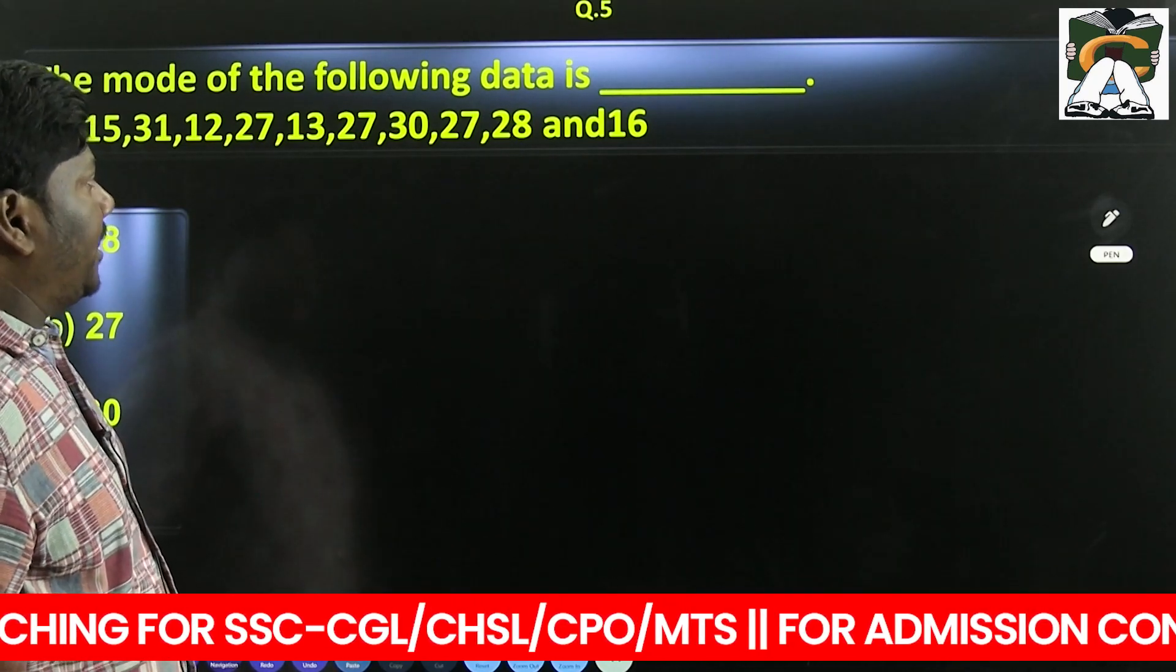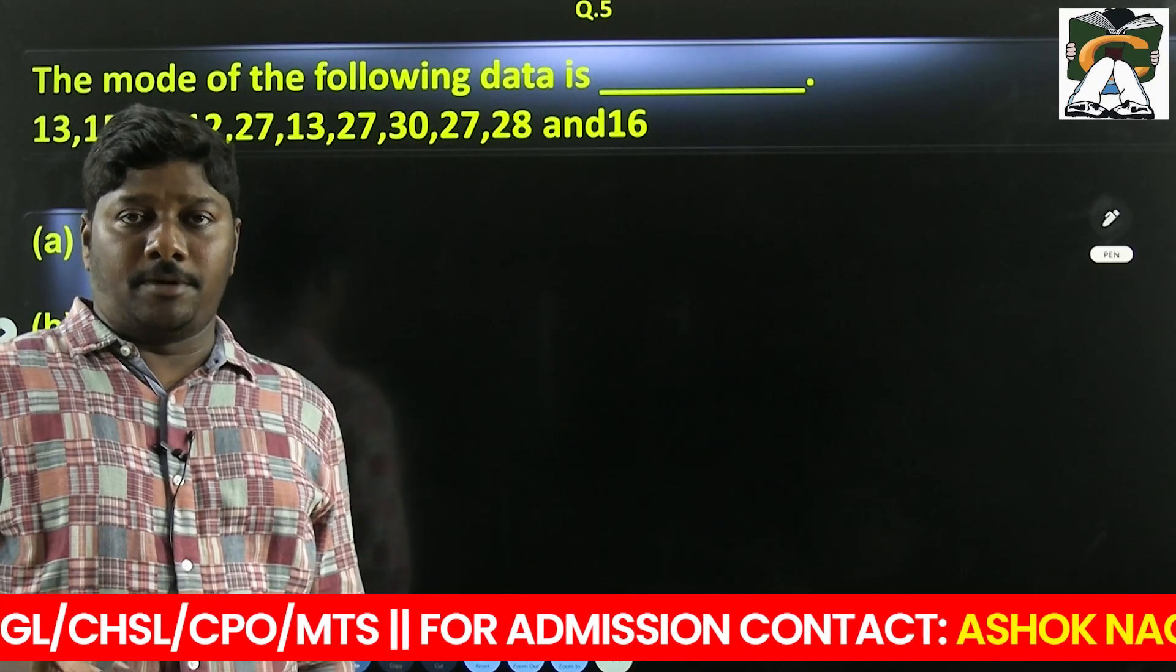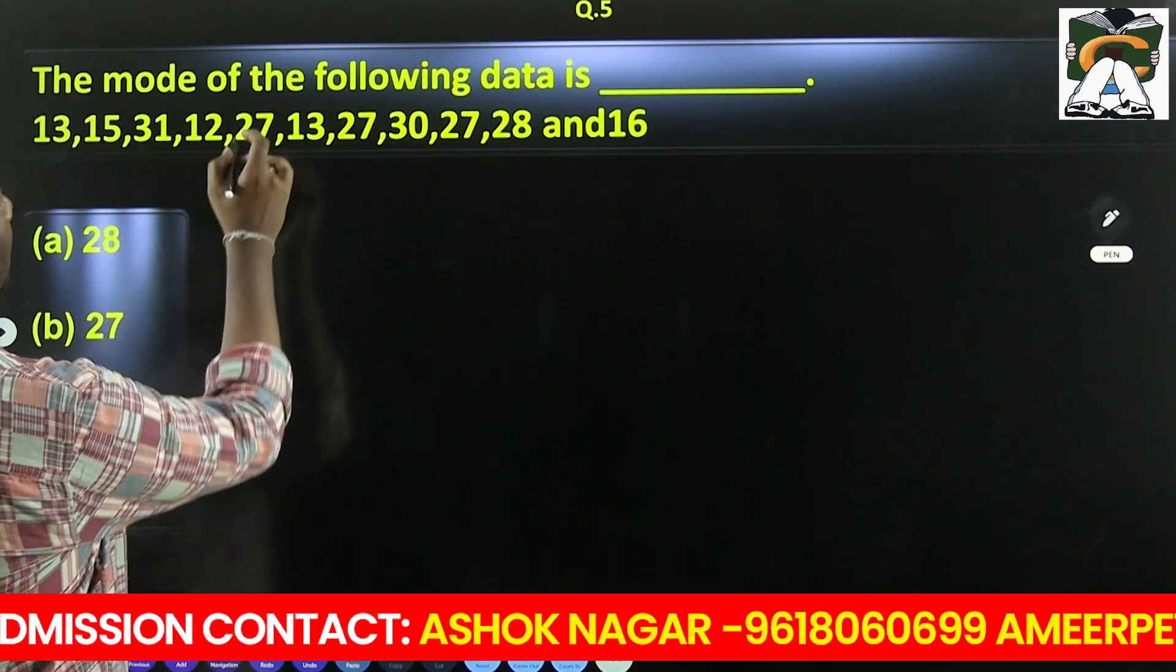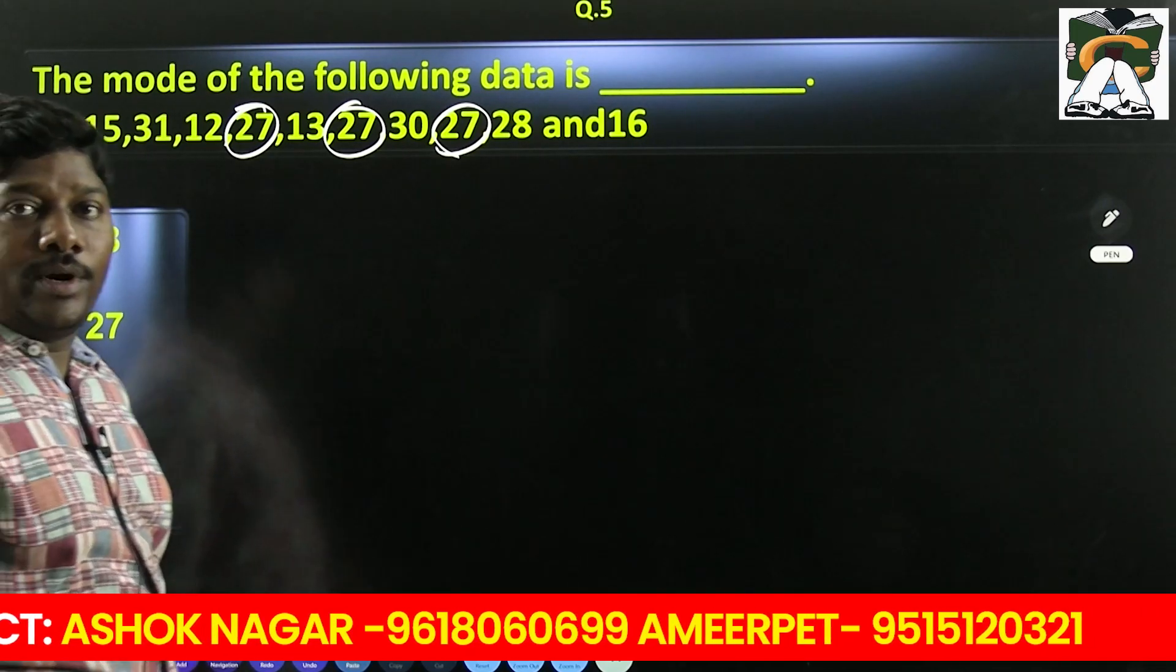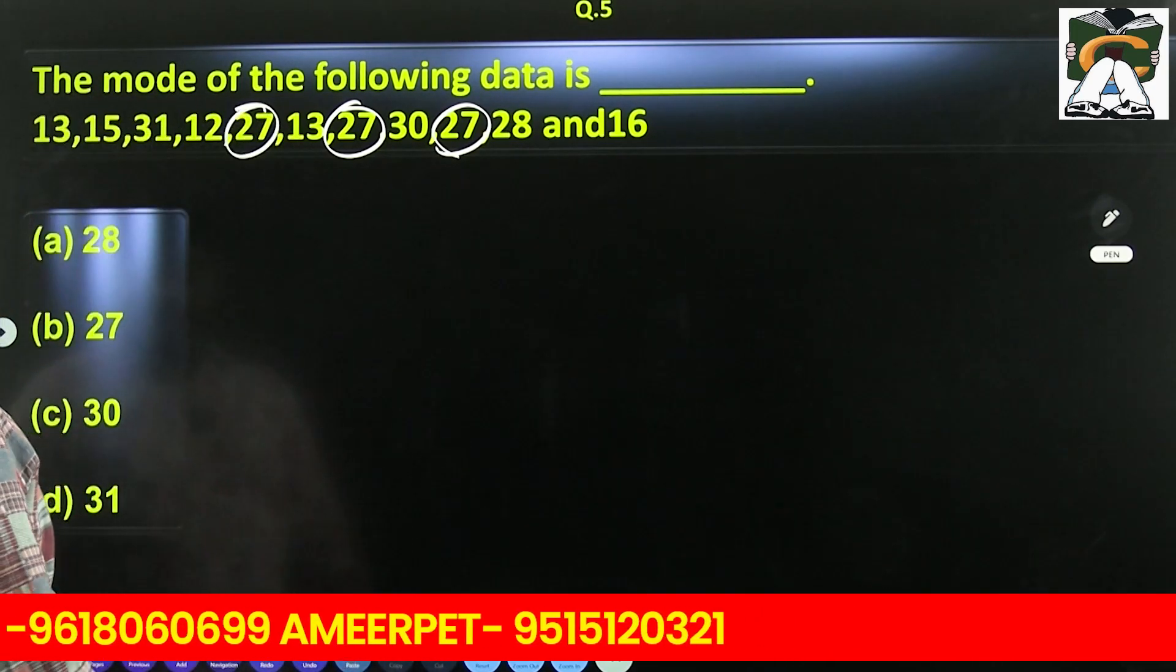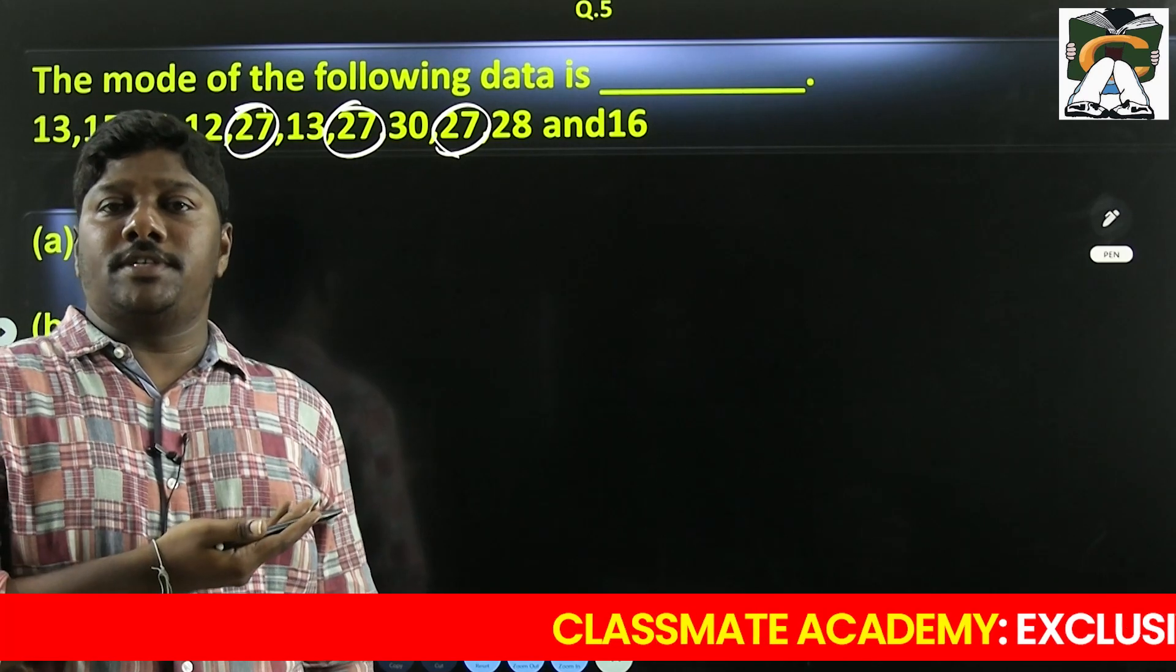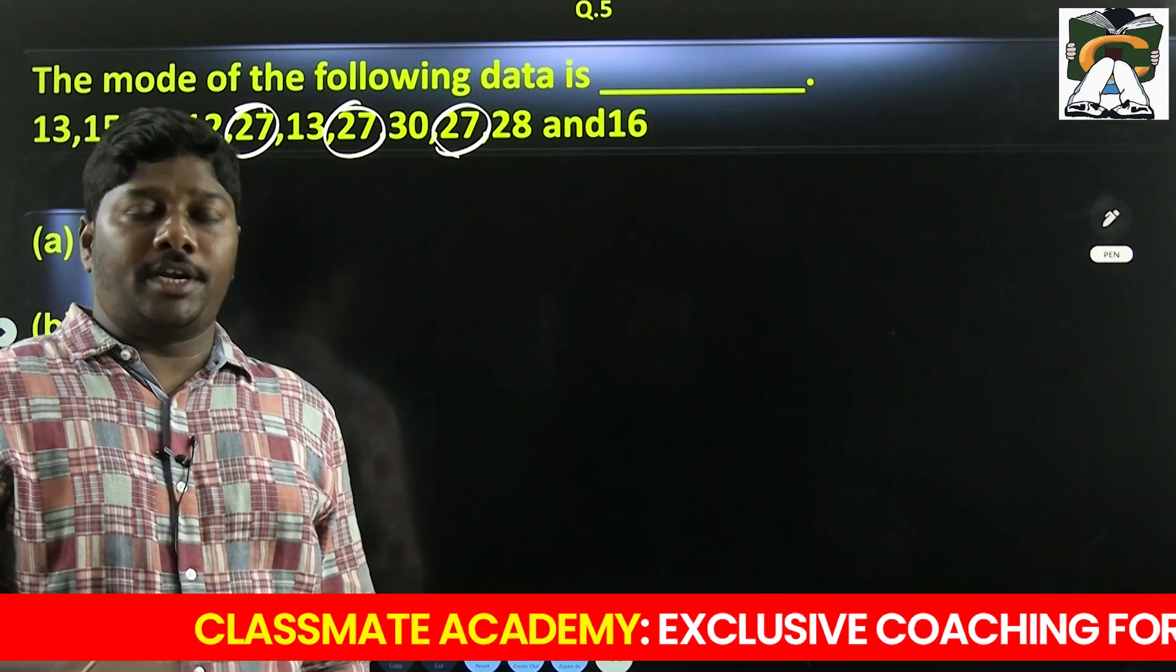Find the mode of the following data. Mode is the most frequently occurring observation. Looking at the data: 13 appears 2 times, 27 appears 3 times. Since 27 repeats the most times, the mode is 27. You can consider this a free question, because just by looking we can see 27 repeats many times, so the mode is simply 27 - the most repetitive observation.